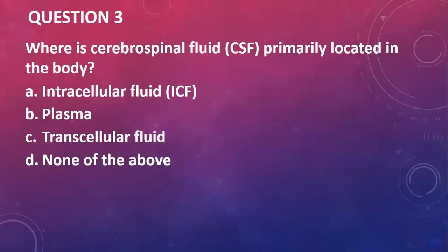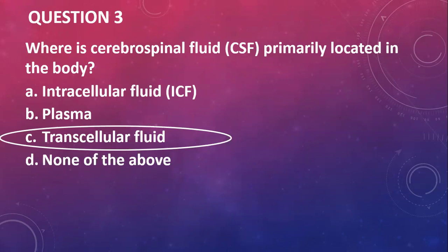Question three: where is the cerebrospinal fluid primarily located in the body? It is located in a compartment called the transcellular fluid. These are a group of fluids that don't easily exchange their water with other compartments, including bone, vitreous humor, aqueous humor, peritoneal fluid, pericardial fluid, and synovial fluid.